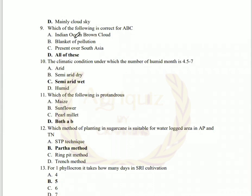The next question: ABC stands for Asian Brown Cloud. It is also known as the Indian Ocean brown cloud. This ABC is a blanket of pollution and it is present over South Asia. So here, all of the above is the correct answer.